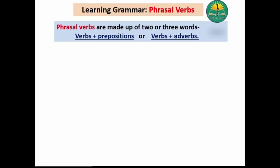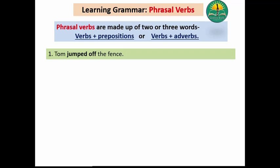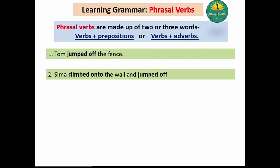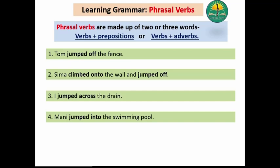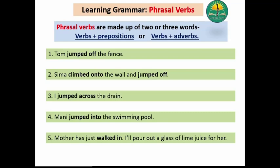Phrasal verbs can be verbs plus prepositions or verbs plus adverbs. Let's have a look at some examples: Tom jumped off the fence — 'jumped off' is verb plus preposition. Sima climbed onto the wall and jumped off. I jumped across the drain. Money jumped into the swimming pool. Mother had just walked in. I'll pour out a glass of lime juice for her. The bold words are phrasal verbs — a verb used together with a preposition or adverb.